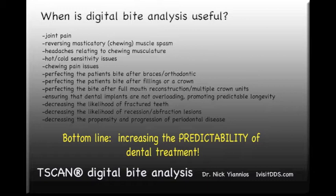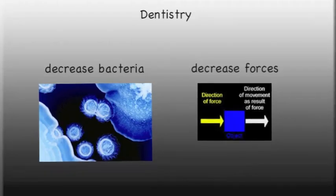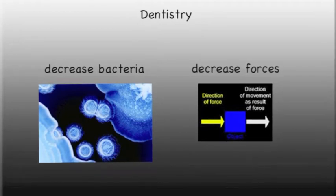Digital bite adjustments using T-scan technology can usually eliminate or at least sequester such problems. Precise and predictable dental treatment can be expected with the addition of T-scan technology, as this technology allows the dentist to harmonize the relationship between jaw muscles, jaw bones, and teeth.